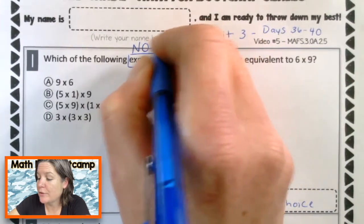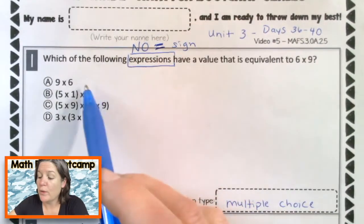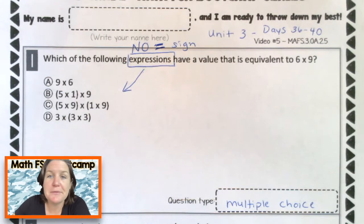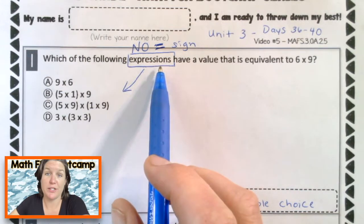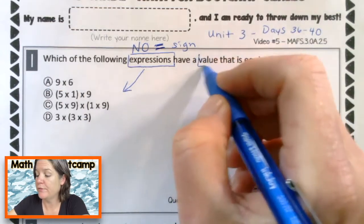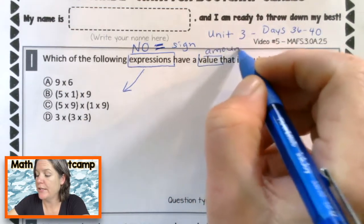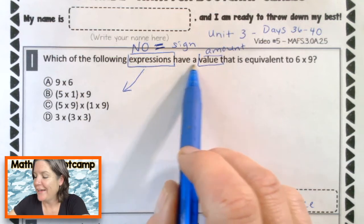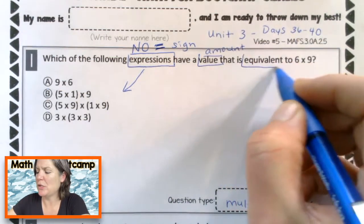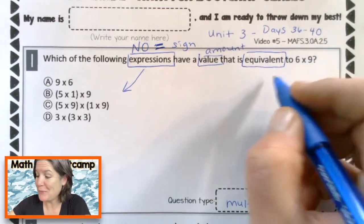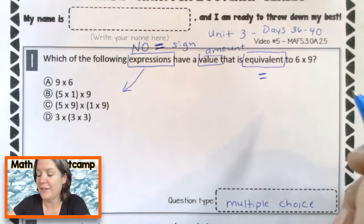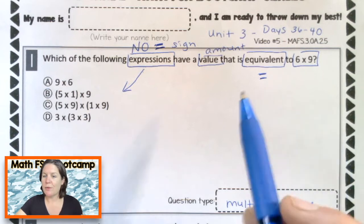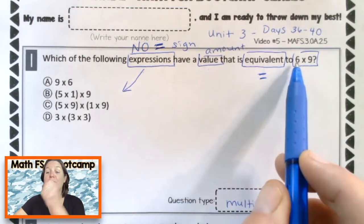Let's read it. It says, which of the following expressions — remember that expressions have no equal sign. If there was an equal sign, it would be called an equation, but an expression are just like these guys down here and you don't see an equal sign. So which of the following expressions have a value — value means amount here — that is equivalent? Equivalent means equal. Equivalent to six times nine. Before we even jump in, let's go ahead and determine what would be the value of six times nine.